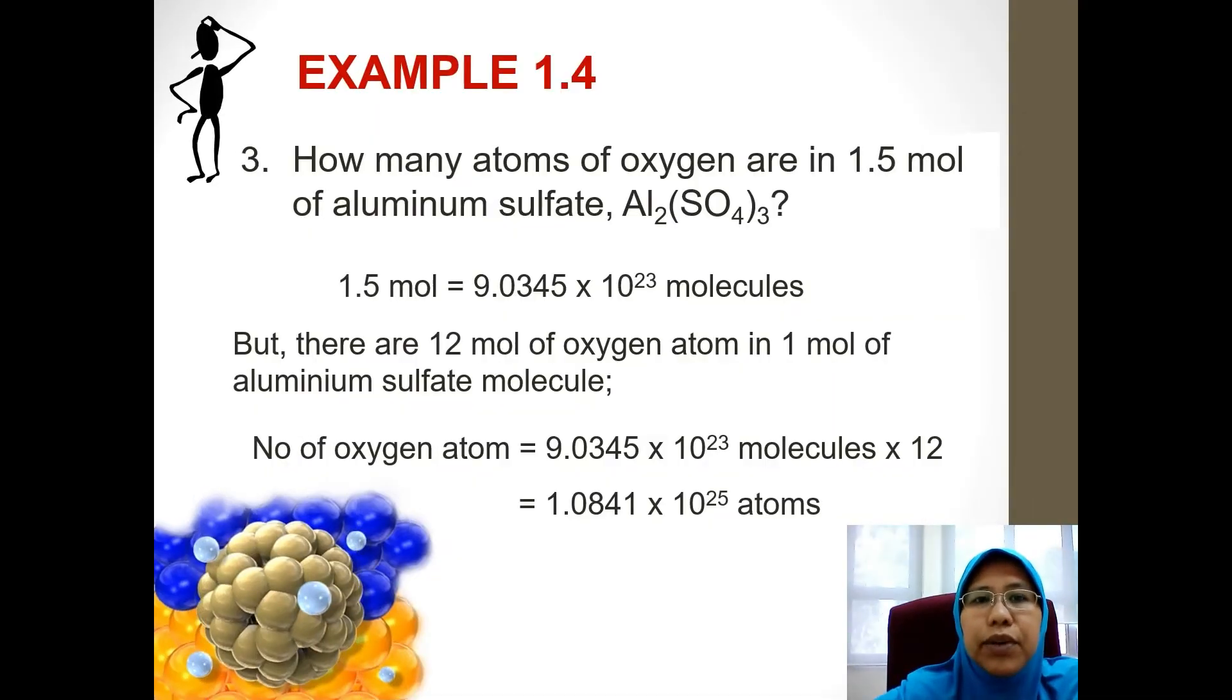Question number three is how many atoms of oxygen are there in 1.5 moles of aluminum sulfate? The formula for aluminum sulfate is given, Al2(SO4)3, meaning that how many atoms of oxygen are there? Twelve. So do the same thing, find the number of mole for the molecule, which is 9.0345 times 10 to the power of 23, and then you multiply it by 12, and then you'll get 1.0841 times 10 to the power of 25 atoms. Good.